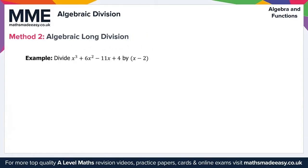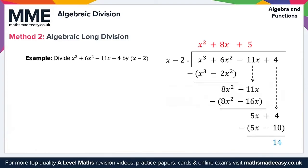Moving on to method 2, which is algebraic long division. This method uses the same principles as long division for numbers, but for algebraic expressions. For step one, we divide x cubed by x to get x squared and place this at the top. We then multiply x squared by x minus 2 to get x cubed minus 2x squared. We perform the subtraction to get 4x squared and bring the minus 11x down.